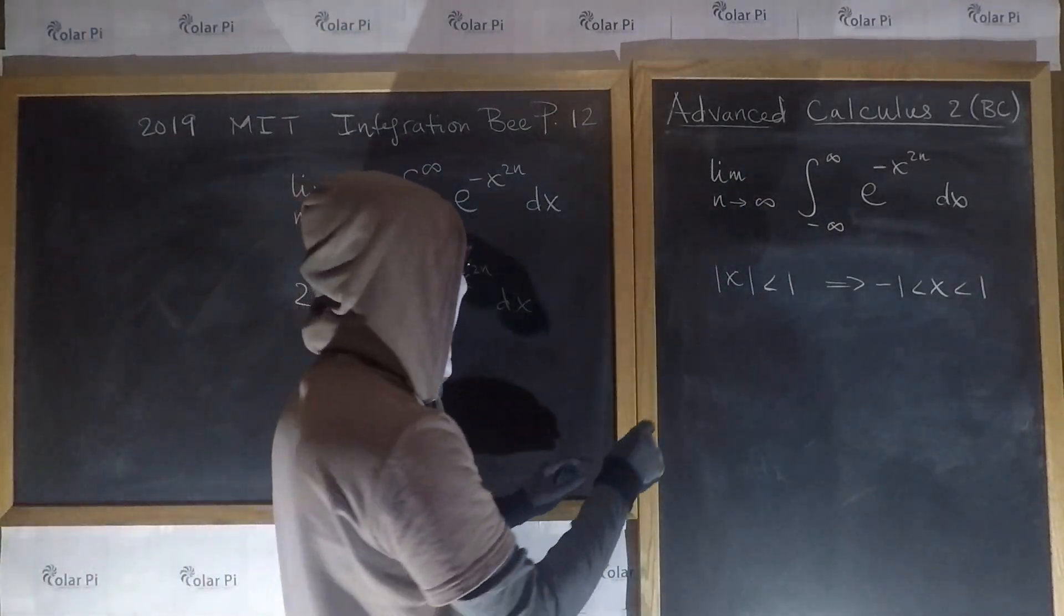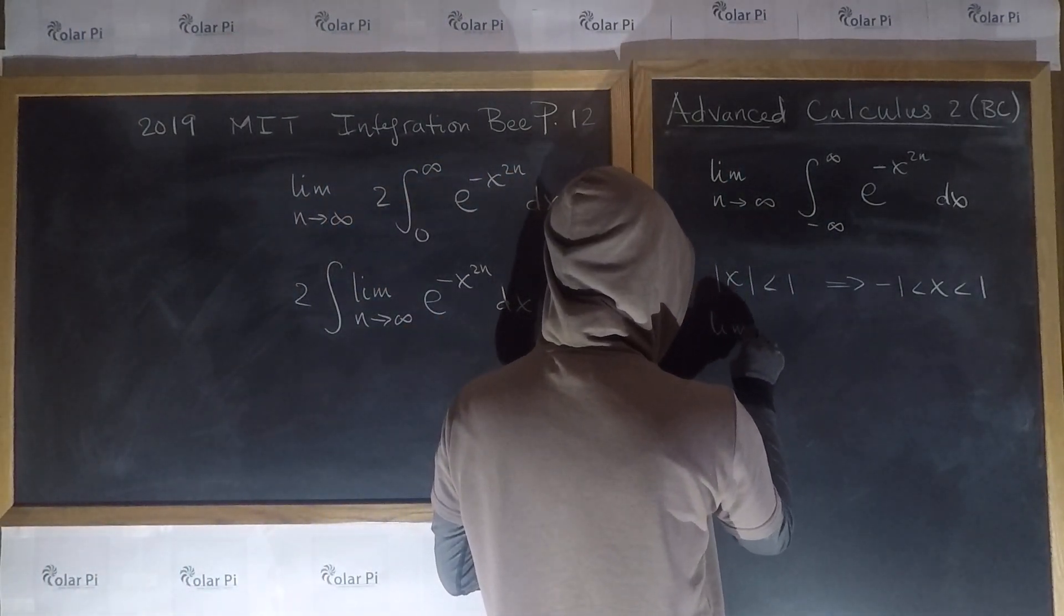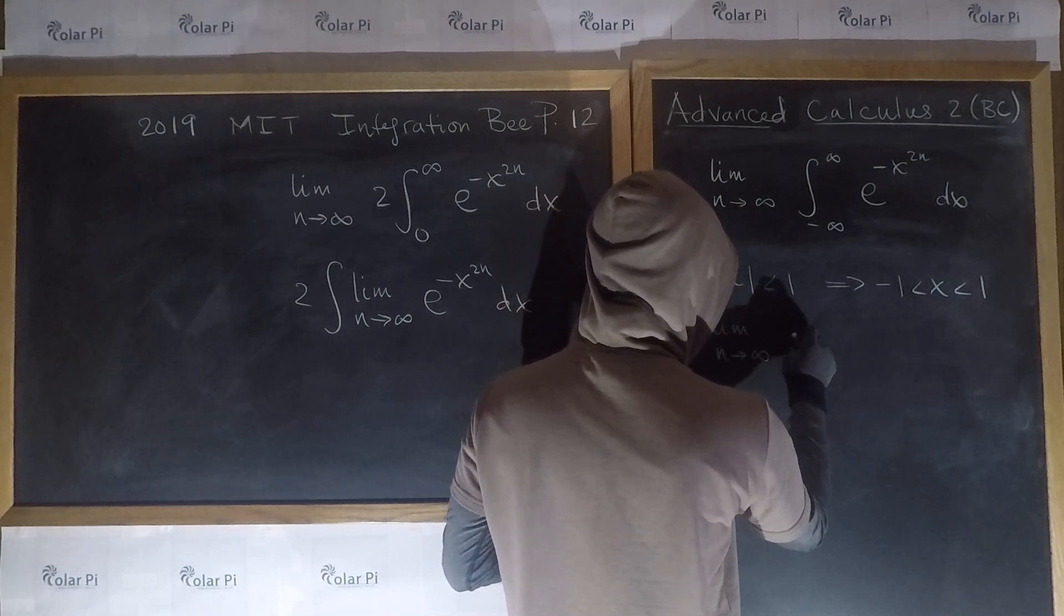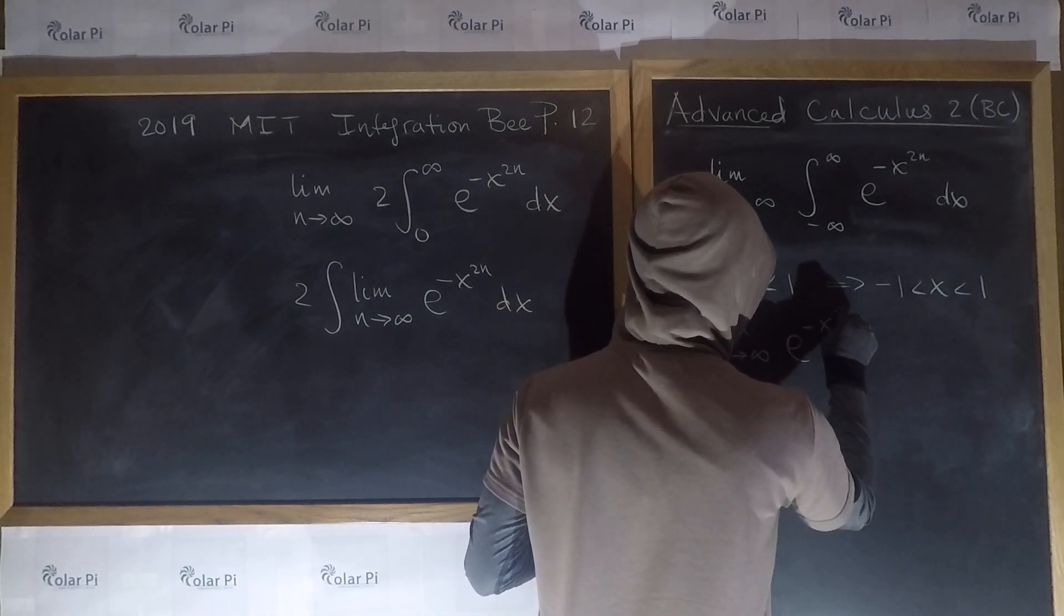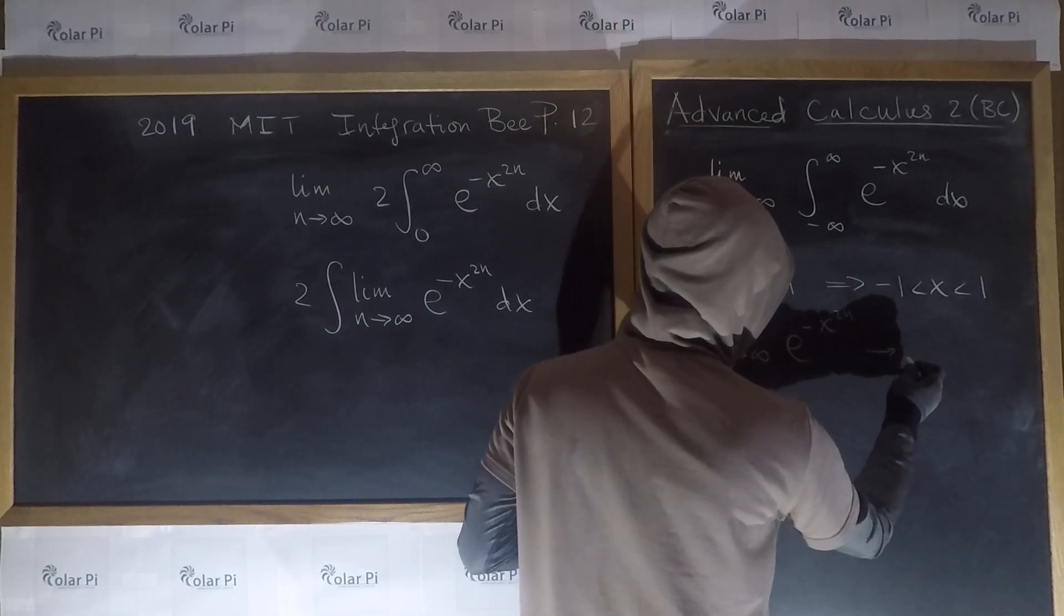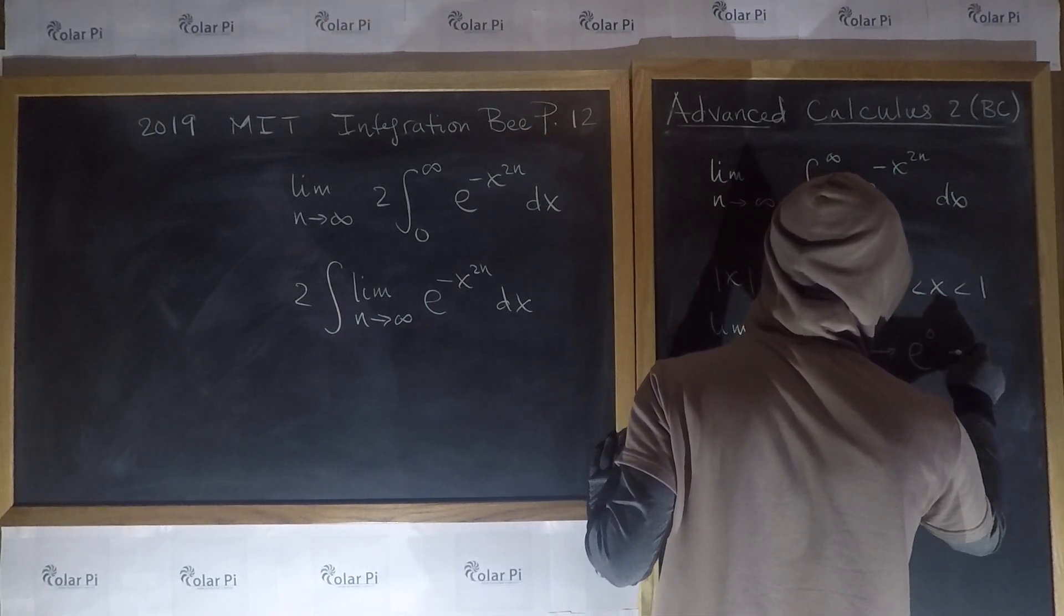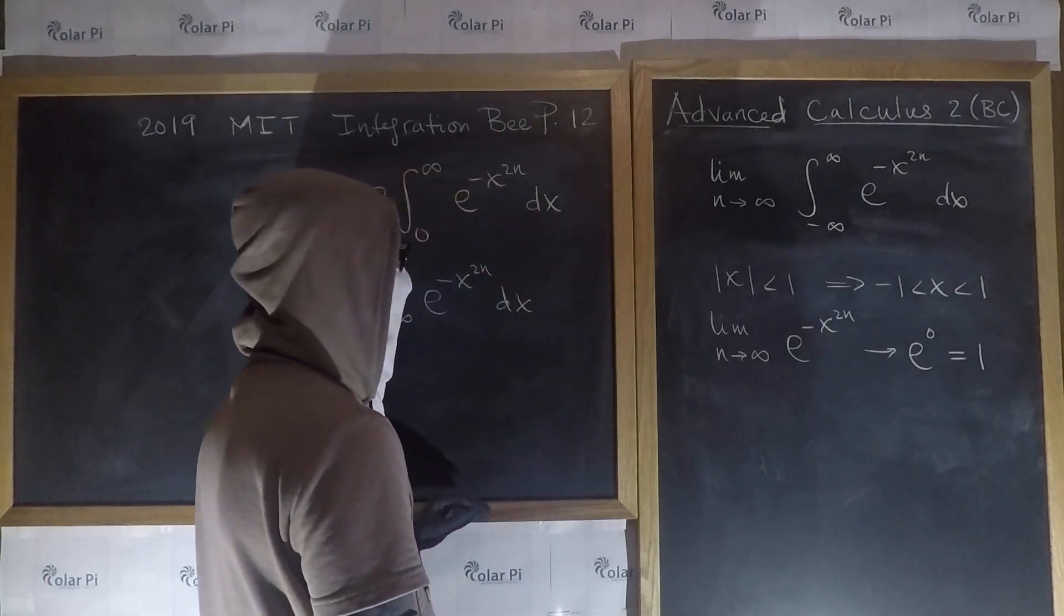for such x's, the limit as n goes to infinity of e to the minus x to the 2n power is e to the 0, which is 1. But,